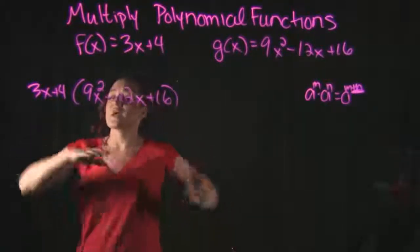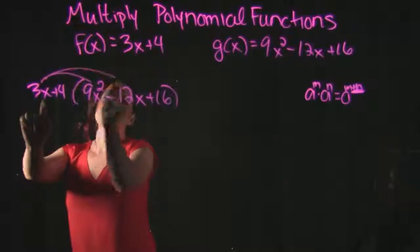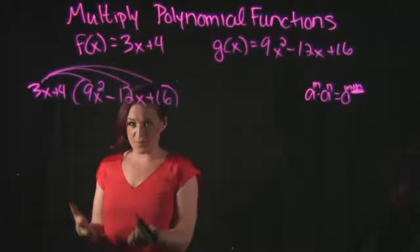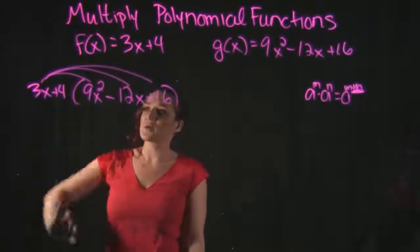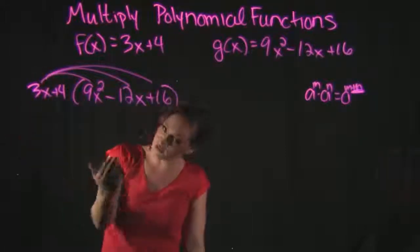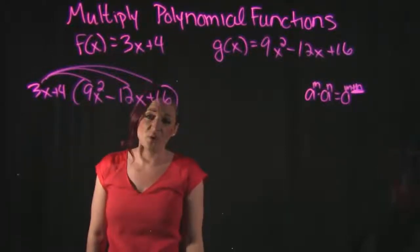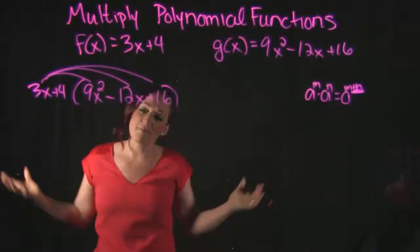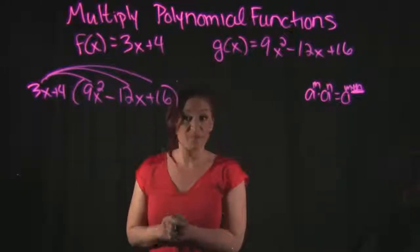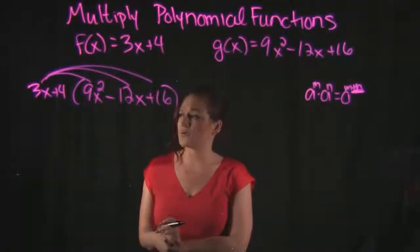What that means is I'm going to take the 3x and multiply it to everything in the second polynomial. Then I'm going to take the 4 and multiply it to everything in the second polynomial as well. Then I'm going to combine like terms at the end — that's essentially how you multiply polynomials together.